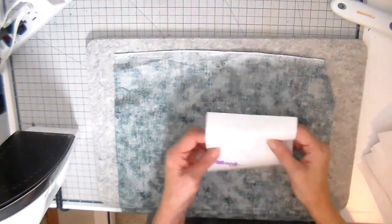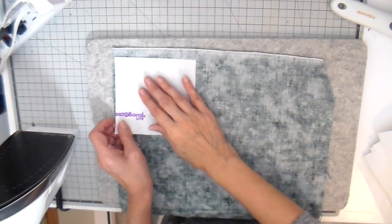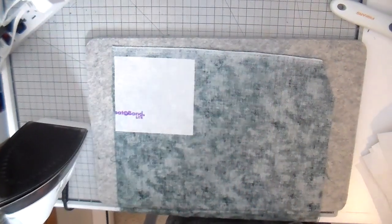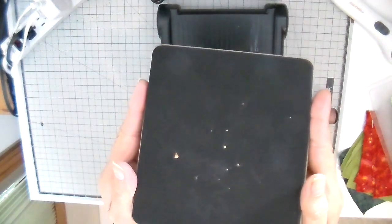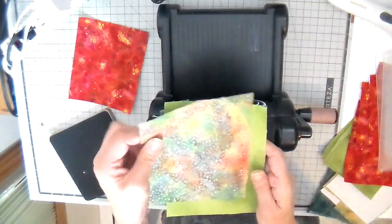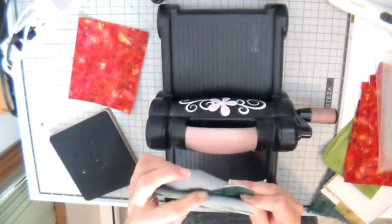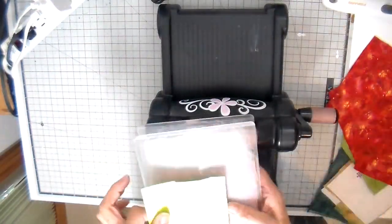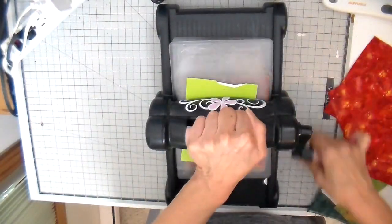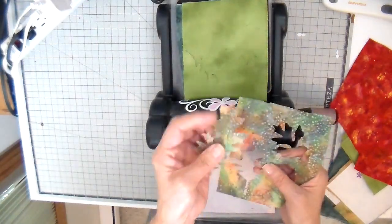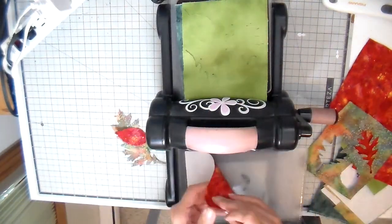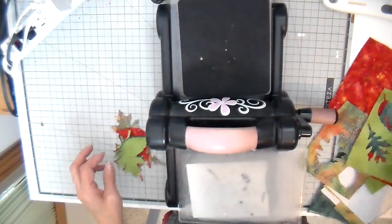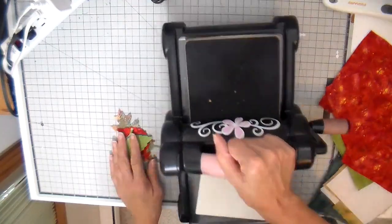On to my appliques, I'm just taking a piece of Heat and Bond Lite and just pressing it on the backside of my scrap fabrics here. I'm going to be using the Tim Holtz die cut. This is the Tattered Leaves, and cutting using my Sizzix Big Shot. I have four layers of fabric when I'm running at the same time. That lime green piece that you saw on the top, that's just cardstock and I'm just using that as a shim, just so I have a really crisp cut on these leaves. Really easy way to cut out appliques.